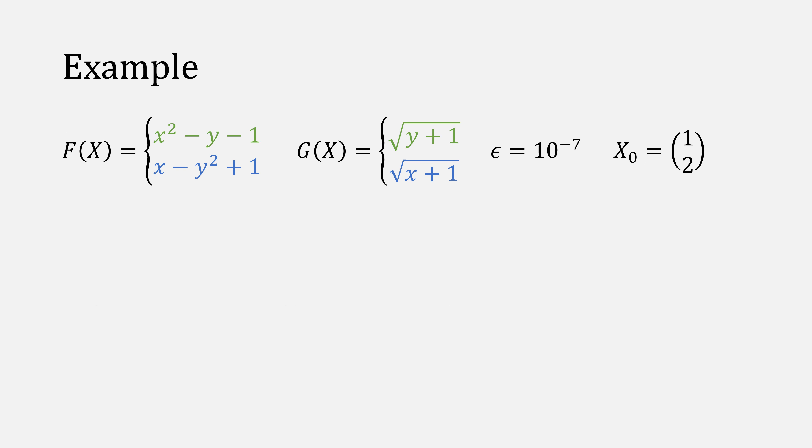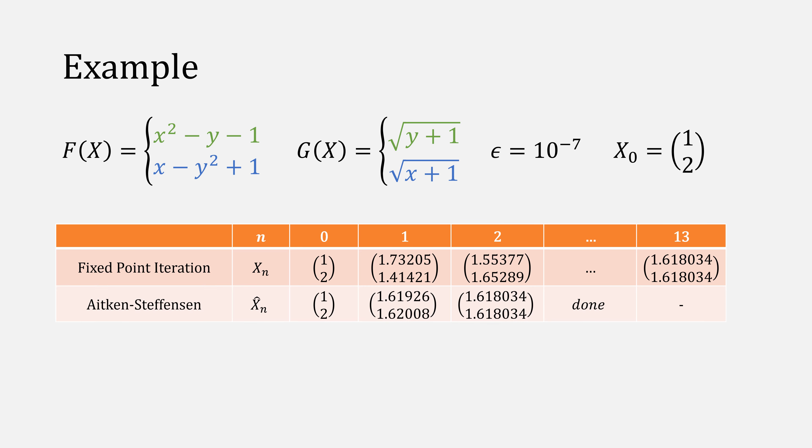Here's an example using the same f and g from earlier, starting from x zero equal to 1, 2. Using fixed-point iteration, it takes about 13 iterations for this to find a solution, but with Stephenson's method, it only takes two iterations.